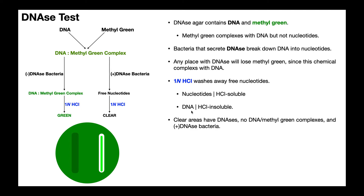If you have a DNase-negative organism, it was not able to break down the DNA, so the DNA is still going to be there. It will just appear green everywhere around the streak. If you see something like this on the left — there's no clearing of the green, it's still green all around that streak — that is a DNase-negative organism. It's negative because it doesn't have DNase, it can't break down the DNA, and so all that DNA in the plate is still complexed to the methyl green and remains green around the streak.